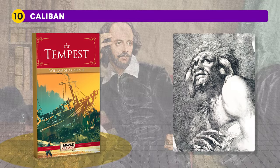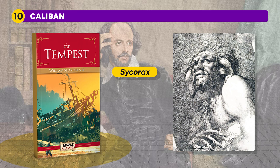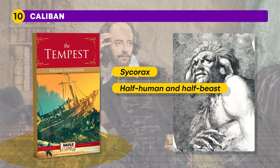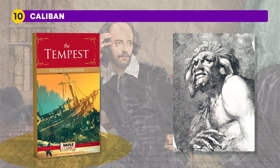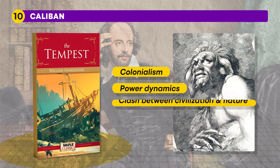The final character is Caliban from Shakespeare's play The Tempest. He is a native of the island on which the play is set and is the son of the witch Sycorax. Caliban is depicted as a primitive and monstrous figure, often seen as half-human and half-beast. He initially serves Prospero, the exiled Duke of Milan, but rebels against him after feeling mistreated and enslaved. Caliban represents themes of colonialism, power dynamics, and the clash between civilization and nature.